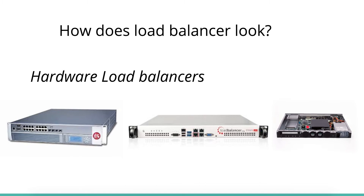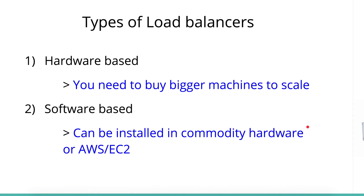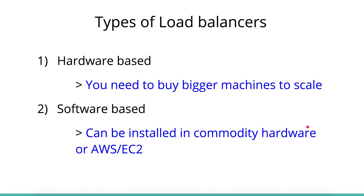A software-based load balancer is where you take the load balancer software and install it on commodity hardware or on an EC2 instance, and it can scale however you want. You can configure it so that based on your traffic, you keep adding more EC2 instances, adding software-based load balancers to the system. This is what Amazon Web Services does with Elastic Cloud.